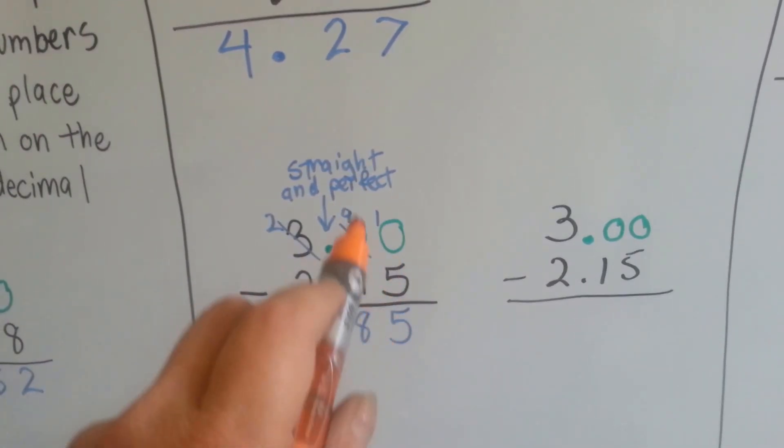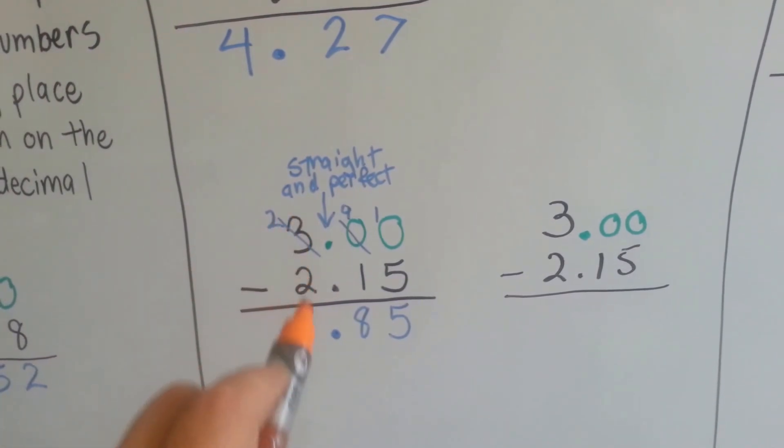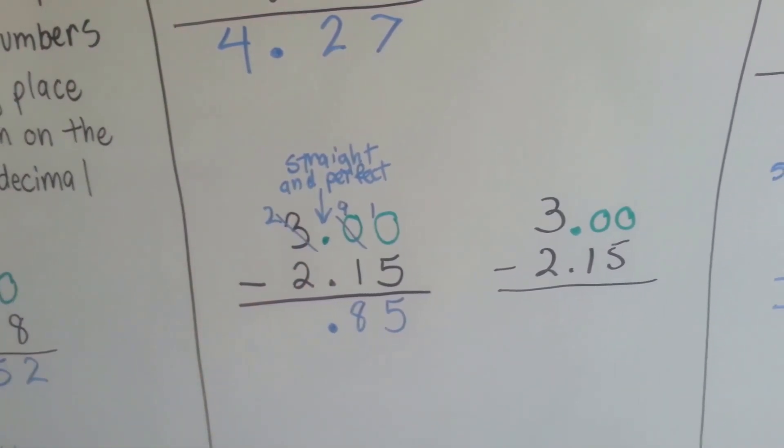10 take away 5 is 5. 9 take away 1 is 8. And 2 take away 2 is none. So we just have 85 hundredths.